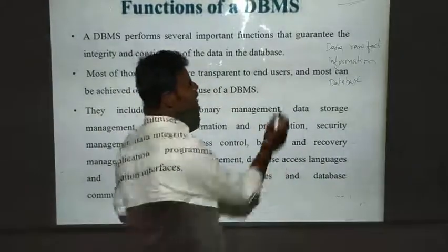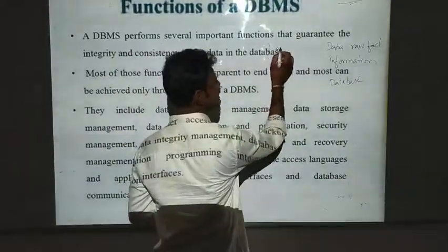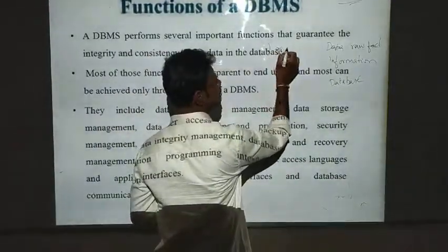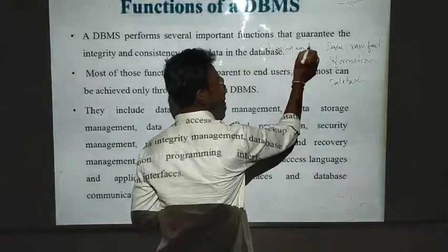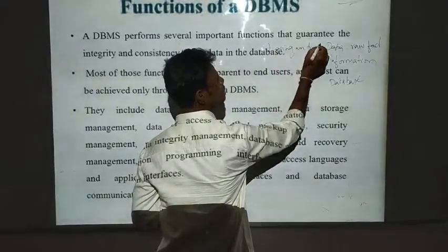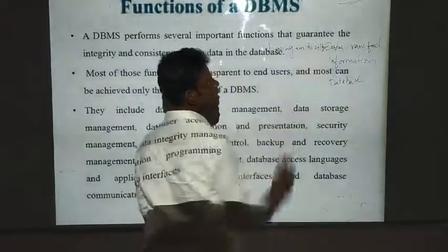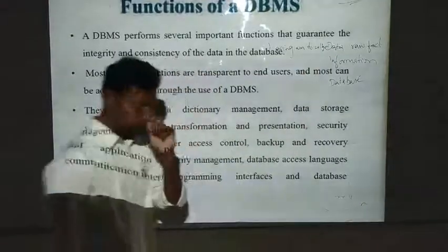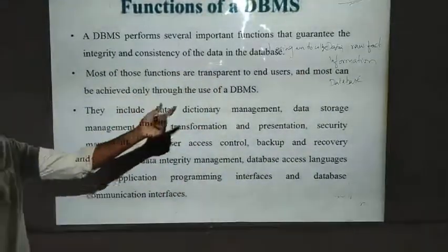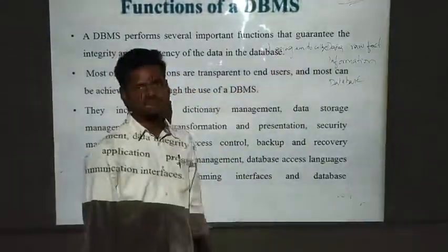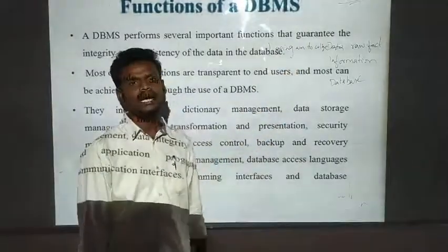For example, if I am having a collection of words like: 'I going am to college.' This is a collection of data. Why? Because it is not giving any meaning. It is a collection of raw facts — a collection of words. This is data.